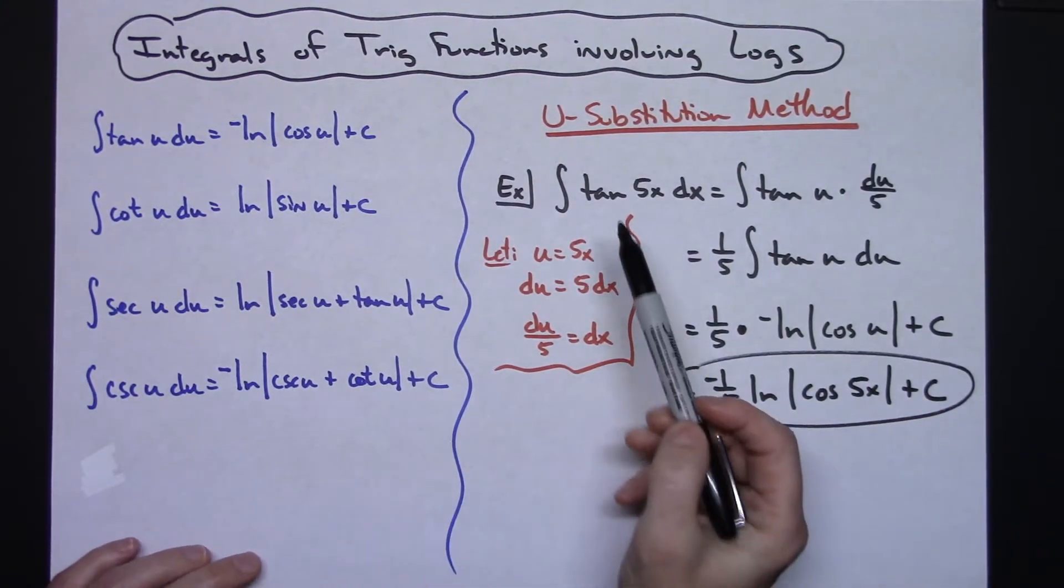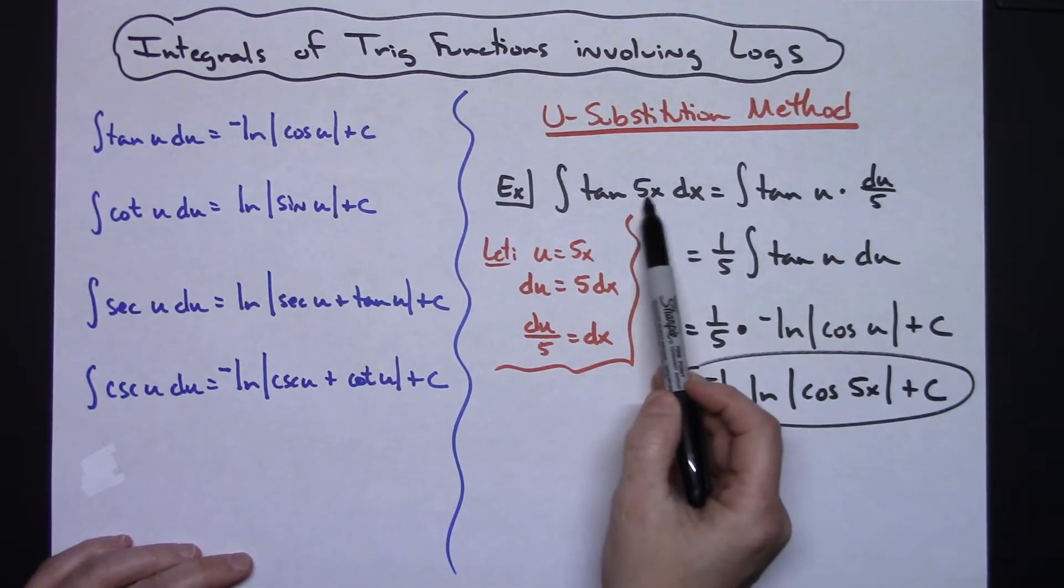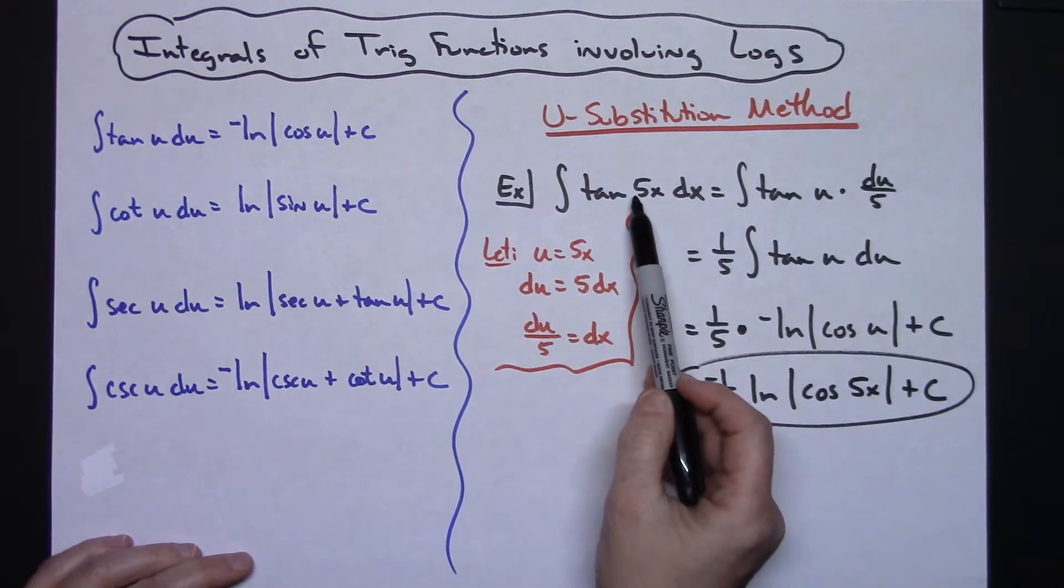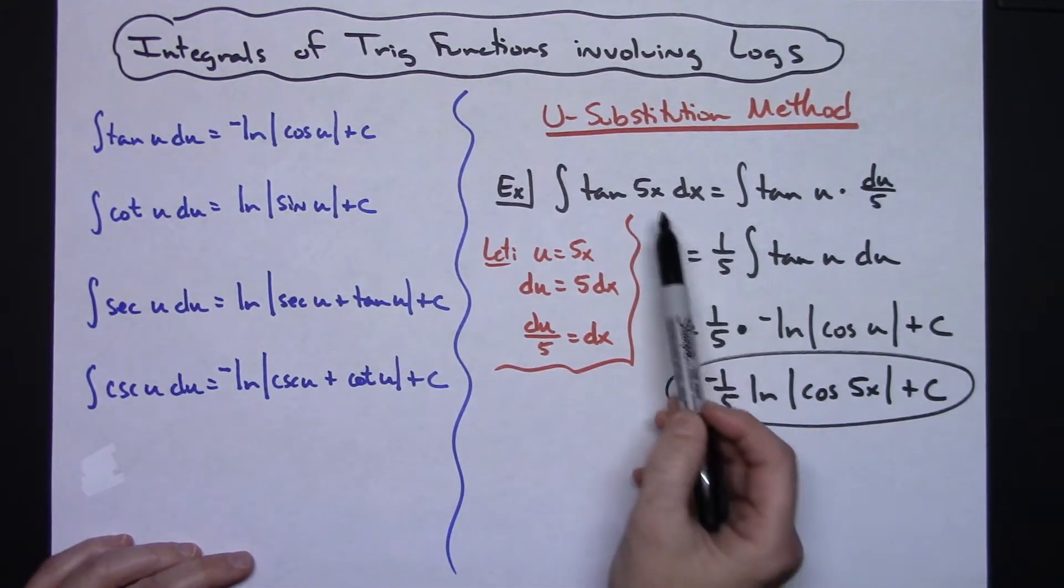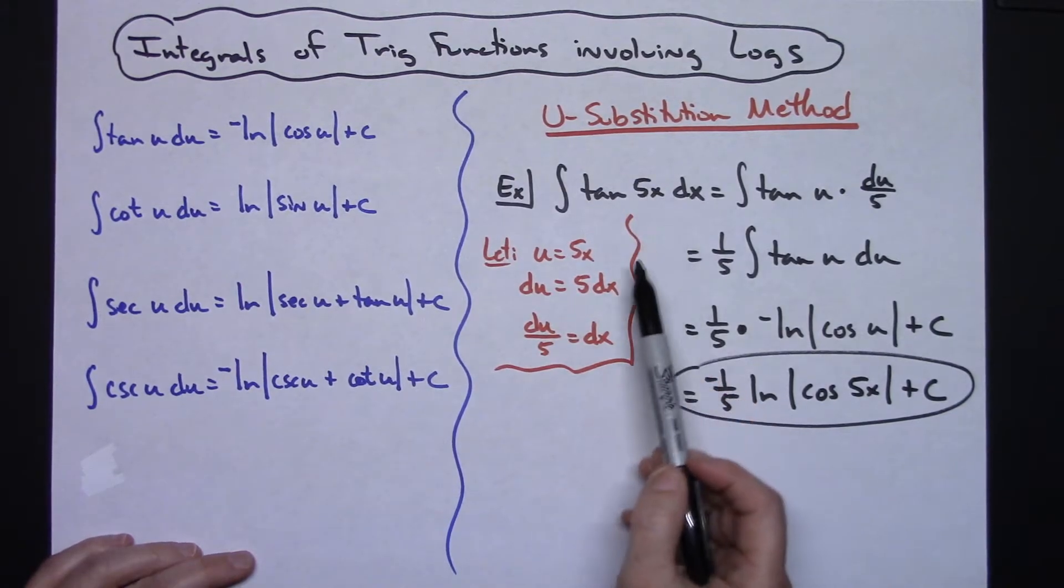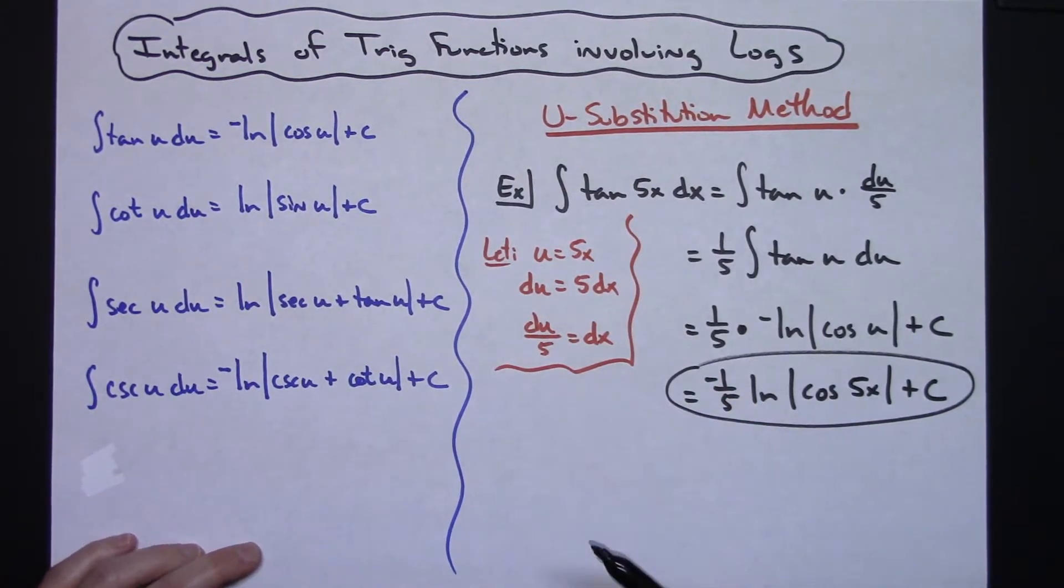The trick here is just realizing that if this is something like 5x or x over 2 or x over 3 or some function of x, you're going to need to do that u substitution to see what's being pulled out there.